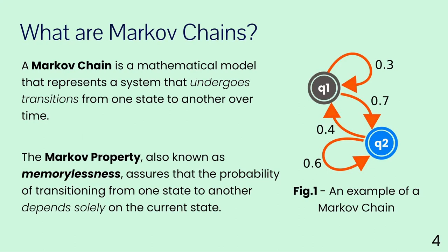So what are Markov chains? Markov chains is a mathematical model that represents a system that undergoes transitions from one state to another over a given period of time. On the right here, you have an example of a Markov chain with two states; the transitions between states carry the probabilities of that transition occurring. An important property, also known as the Markov property or memorylessness, asserts that the probability of transitioning from one state to another depends solely on the current state.